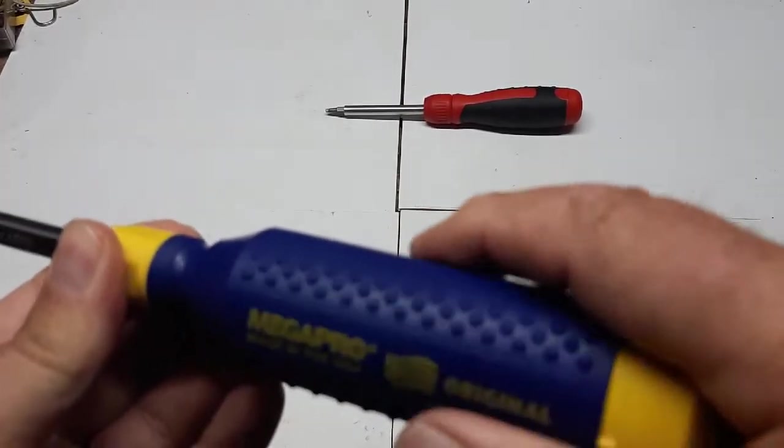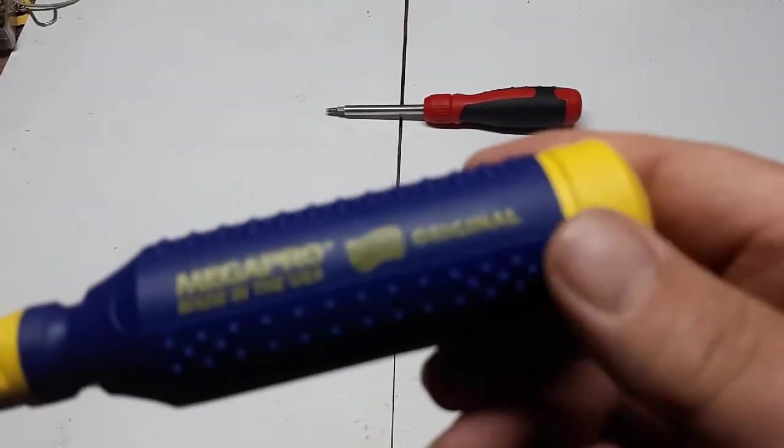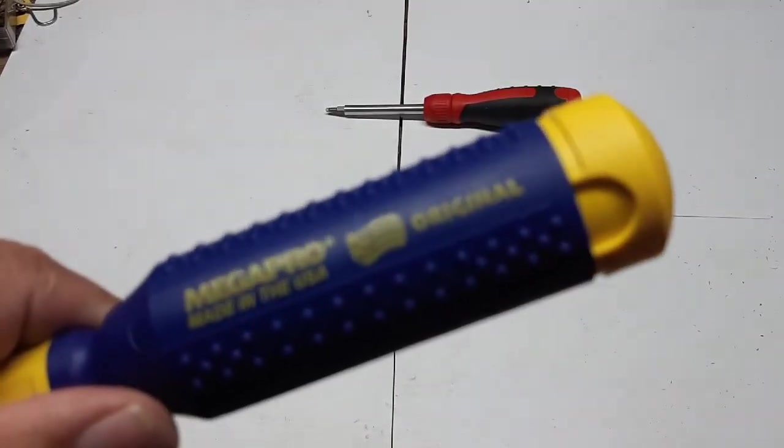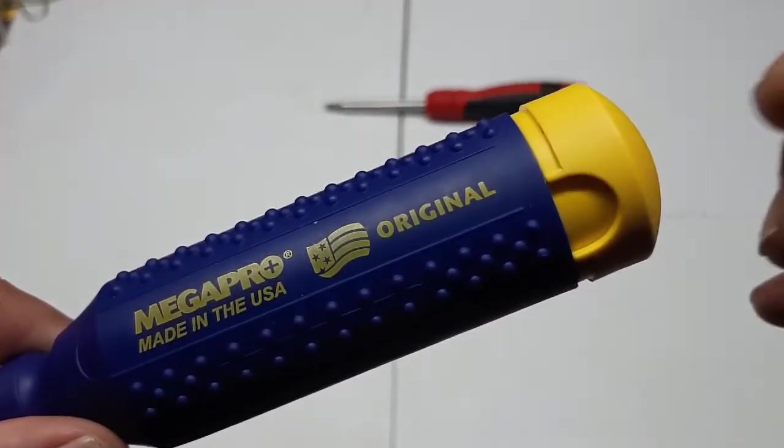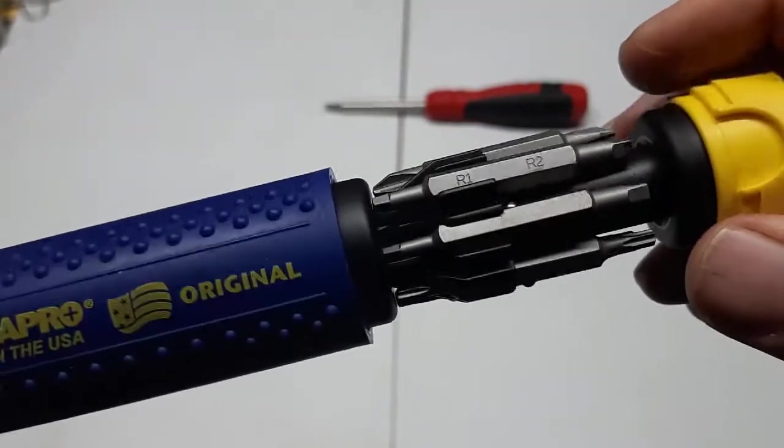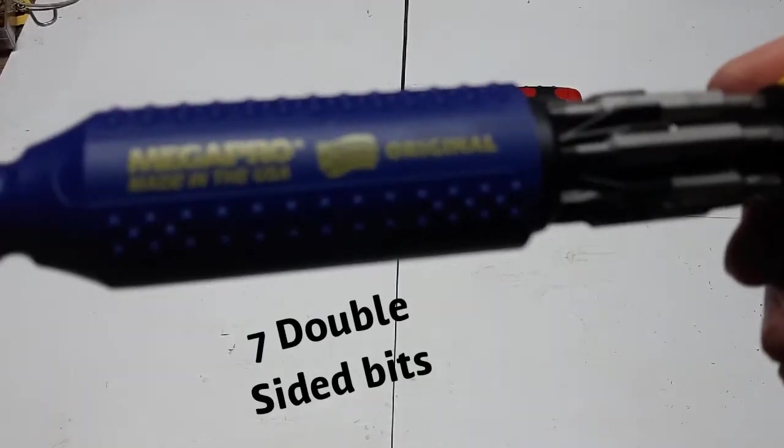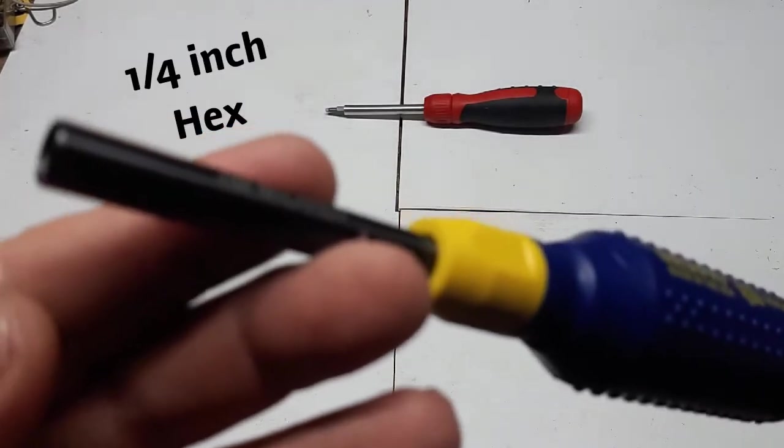This is what they call the 15-in-1. The ratcheting screwdriver is the 13-in-1. This has seven bits, 14 different sides, and it has the hex on the end here, so we'll take a look at these bits today.